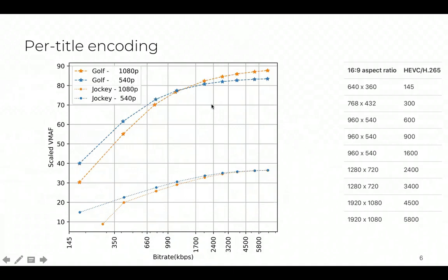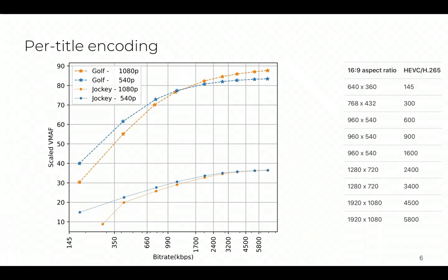As an example, we encode two videos at two spatial resolutions, 540p and 1080p. We see that, in the given bitrate range, for the first video, 540p outperforms 1080p. While for the second video, there is a crossover point around one megabit per second, where before that 540p outperforms 1080p, but after that it is 1080p that outperforms 540p. This shows that bitrate ladders can be optimized for different video segments.